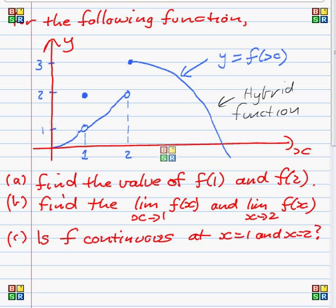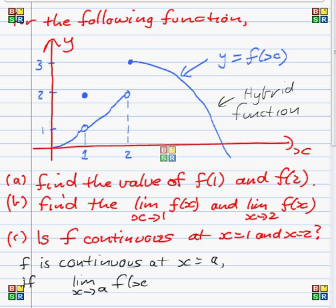And clearly, the bit of theory that we'll be using is that a function f is only continuous at a point x equals a if the limit as x tends to a of f(x) equals f(a). Okay, so that's the bit of theory that we'll always be using with continuity.